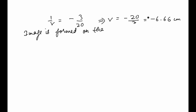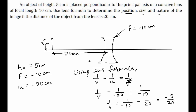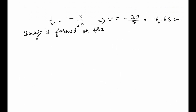Since v is negative, the image is formed on the same side as the object — the left-hand side. This tells us the image is on the same side as the object.